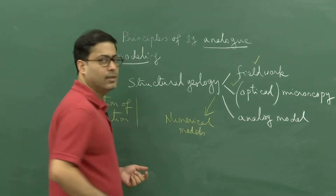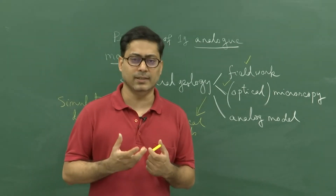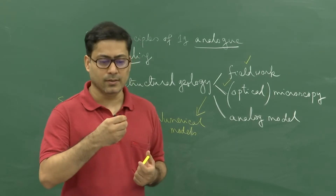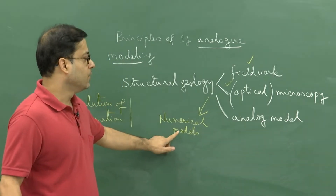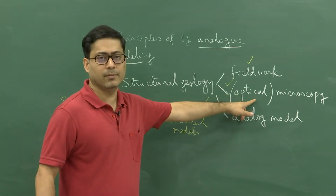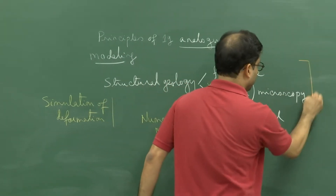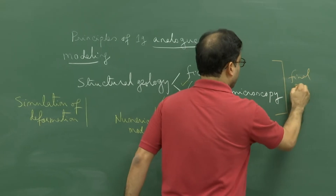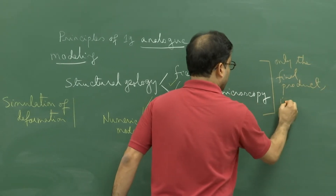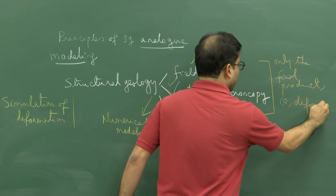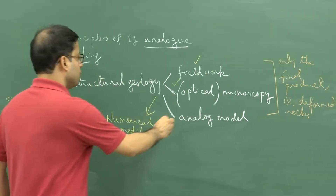On the other hand, the analog model involves no software. It involves soft deformable material deformed at a controlled rate in the laboratory, and we see how it deforms with time. Naturally, the progressive deformation found in analog and numerical models will not be possible to see in field work or optical microscopy — instead, what we see in those two cases is only the final product.